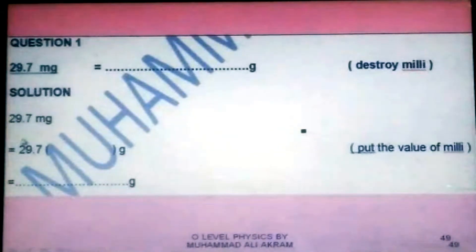I am expecting from my students that if they have understood the concept of destroying a prefix, you should know what is to be written in this bracket. You should know what is the value of milli. The value of milli is 1 over 1000. Within this empty bracket, we have written 1 over 1000. We have destroyed the prefix milli by putting its value, which is 1 over 1000. Now, 29.7 multiplied by 1 over 1000, this equation gives you 0.0297. Very simple process. Milli is destroyed and you have got your answer in grams.